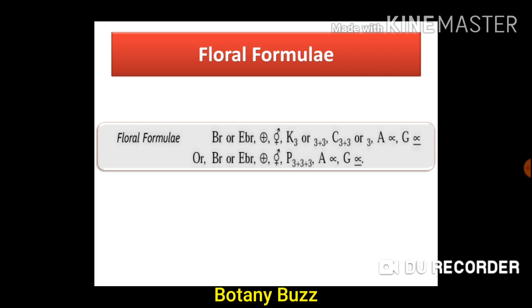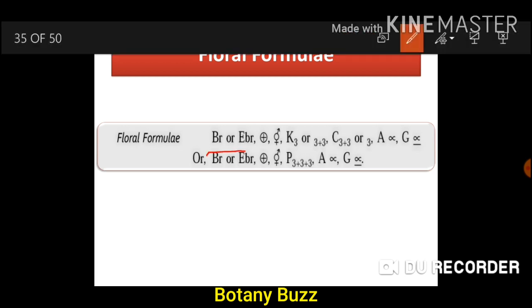The general floral formula of family Annonaceae: bracteate or ebracteate, actinomorphic, bisexual. K3 means calyx with 3 sepals, or 3+3 when arranged in two whorls of three each. C3+3 petals. A∞ means androecium with infinite stamens. G∞ with underline means gynoecium with numerous carpels and superior ovary. Alternative floral formula: bracteate or ebracteate, actinomorphic, bisexual, P3+3+3 — P means perianth when there is no distinction between sepals and petals — 9 parts in three whorls of three each. A∞, G∞ underlined — stamens numerous, carpels numerous, ovary superior.